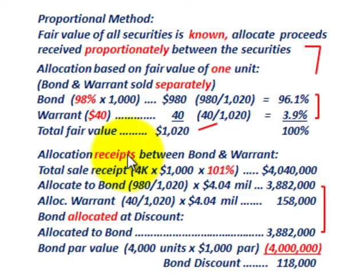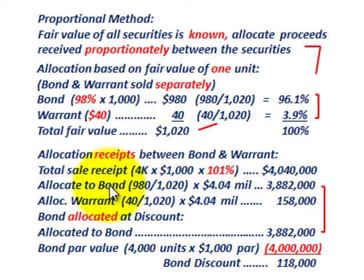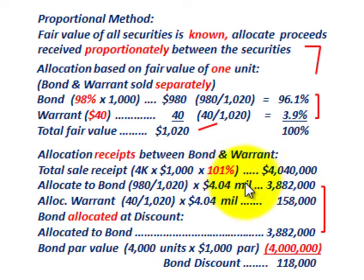Next, we allocate the receipts between the bond and the warrant. Total cash receipts: 4,000 units at $1,000 par at 101% gives total sales receipts of $4,040,000. Allocating to the bond: the fractional amount of 96.1% — that is, $980 divided by $1,020 — times total sales receipts of $4,040,000 gives an allocation to the bond of $3,882,000.